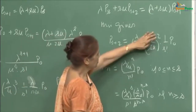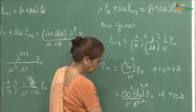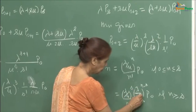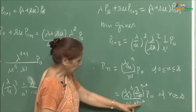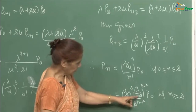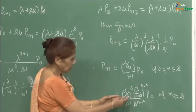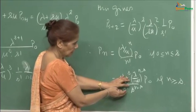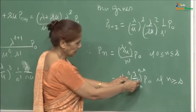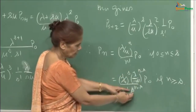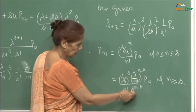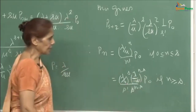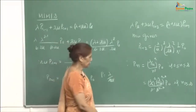For n greater than S, you have (λ/μ)^S / S! and then (λ/(S·μ))^{n-S} · p_0. Writing it out: (λ/μ)^S / S! · (λ/μ)^{n-S} / S^{n-S} · p_0, for n ≥ S. So either way, S can be included and the formula becomes (λ/μ)^n / (S! · S^{n-S}) · p_0 for n ≥ S.